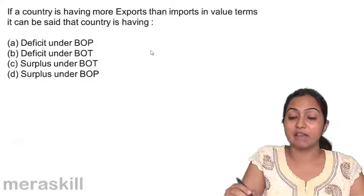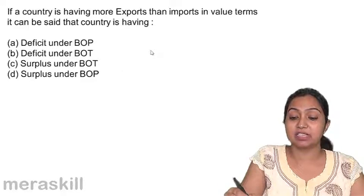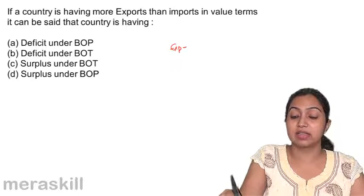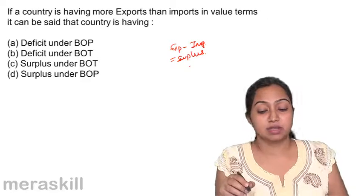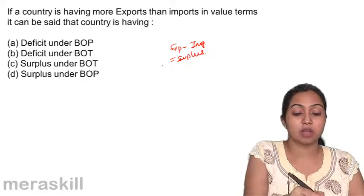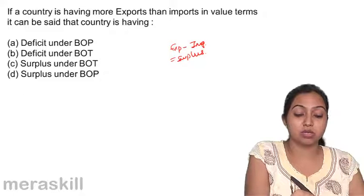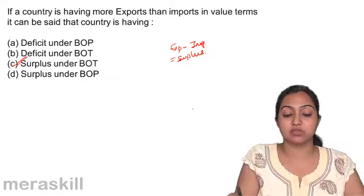If a country is having more exports than imports in value terms, we can say there is a surplus. Exports minus imports means surplus. So we are talking about a surplus under BOT — balance of trade.